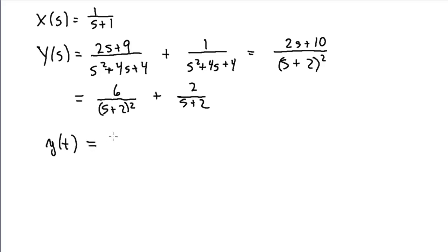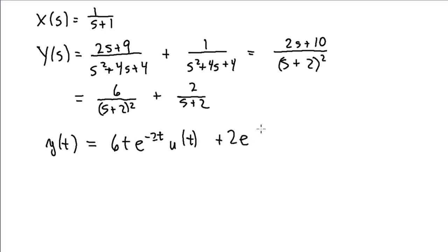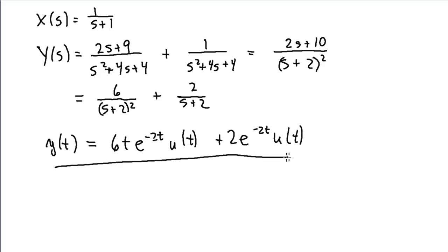Taking the inverse Laplace transform: the first term gives 6t·e^(−2t)u(t), and the second term gives 2e^(−2t)u(t). This is the solution y(t) that satisfies the differential equation and also satisfies the given initial conditions.